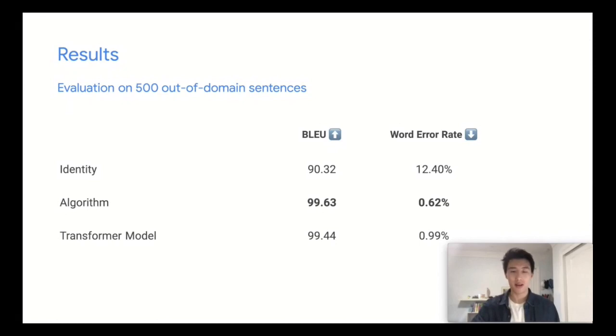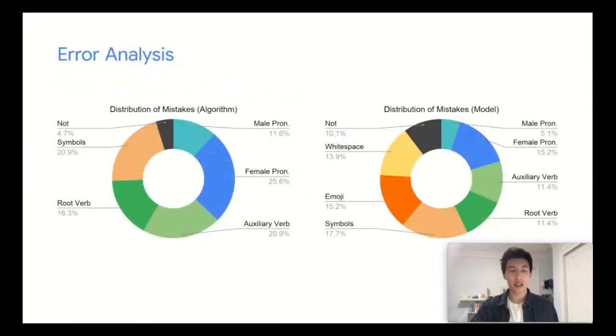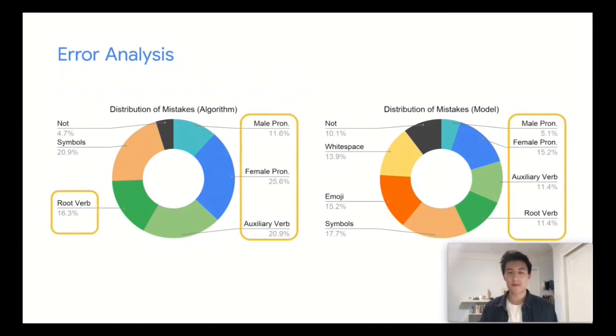The algorithm performs slightly better than the model, but if we look at the distribution of mistakes the algorithm makes compared to the model, the model actually makes fewer mistakes related to pronouns and verbs. In the cases where the model does make a mistake, many of these mistakes are dealing with symbols, emojis, and white spaces.